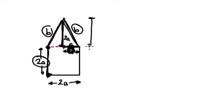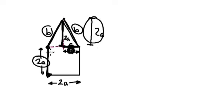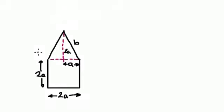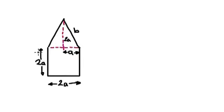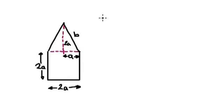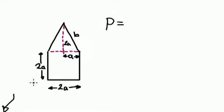So this height here is 2A, which means this height here is the same as this height here. So you're given this shape here — somehow come up with the formula for the perimeter of this shape. Press pause and have a go.